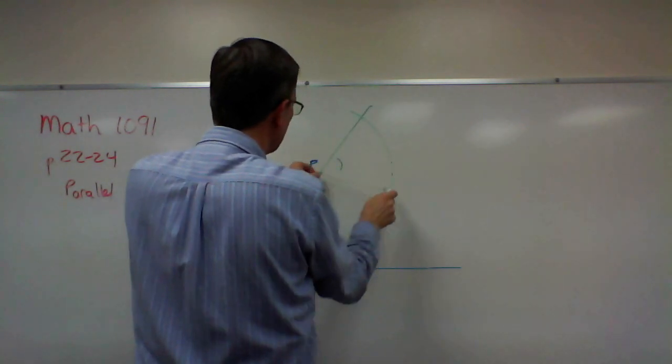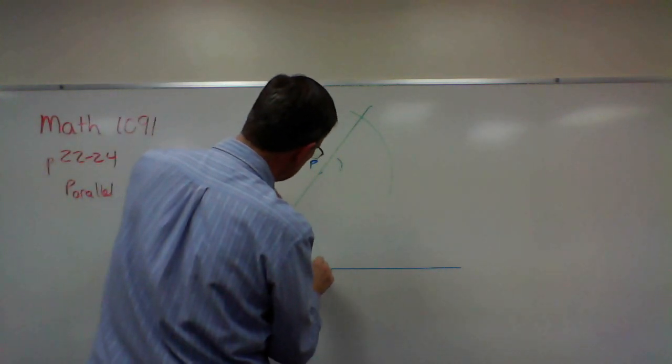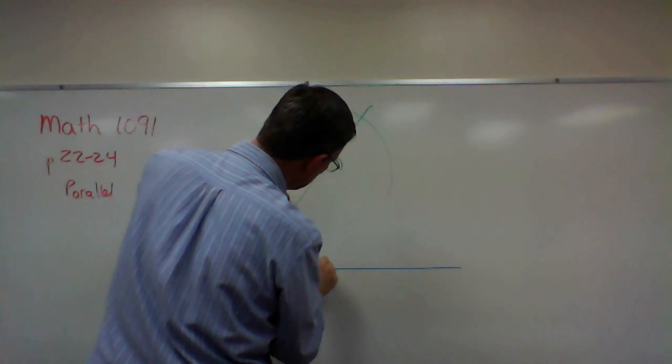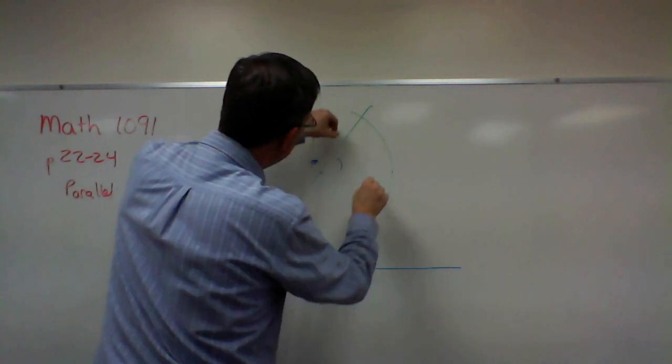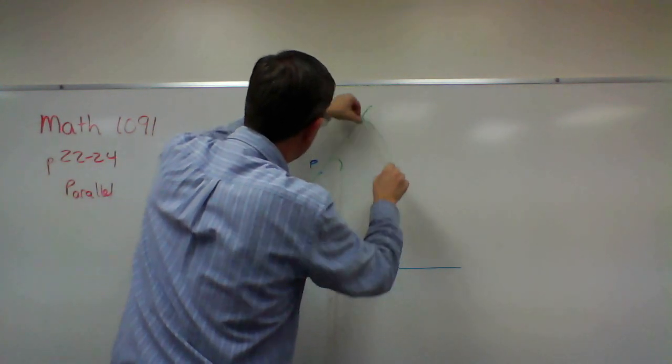All right, then we'll go back and measure the distance where it intersected here and where it intersects here. Then I can go up here, put the tip metal point here, the pencil point right there.